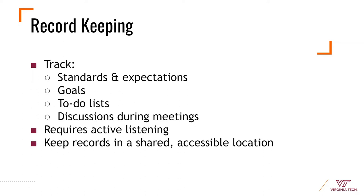Make sure you keep track of all of this information — your standards and expectations, goals, to-do lists, and discussions. This means you will need to actively listen to one another to make sure your record keeping is accurate. Give everyone a chance to look over notes at the end of a meeting to ensure they reflect what actually happened. Keep these records in a shared, accessible location so the whole team is on the same page.